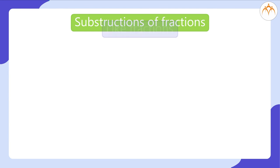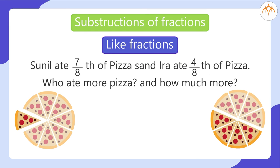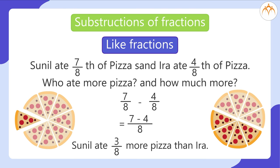Subtraction of fractions. Like fractions. Sunil ate 7 eighths of pizza and Ira ate 4 eighths of pizza. Who ate more pizza and how much more? 7 by 8 minus 4 by 8, which is equal to 7 minus 4 by 8. So, answer is 3 by 8. Sunil ate 3 eighths more pizza than Ira.